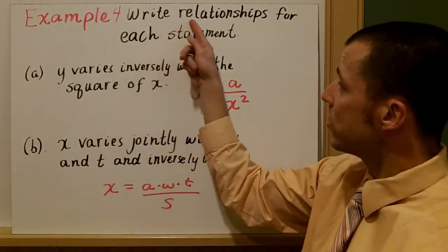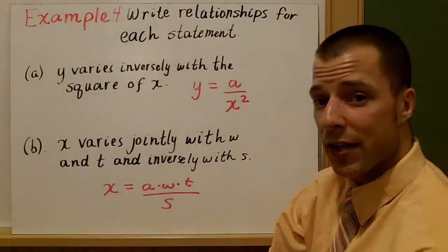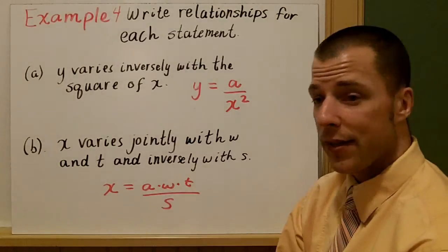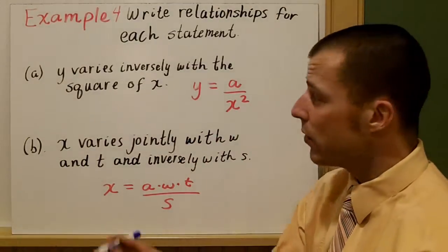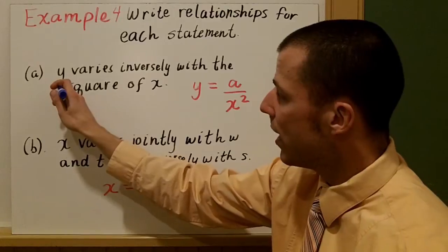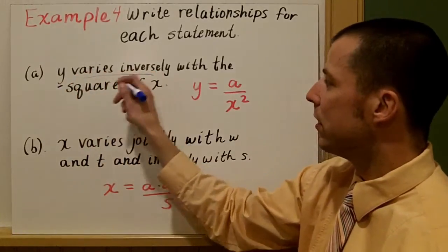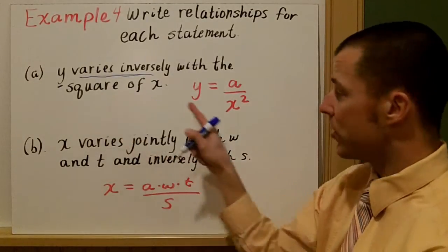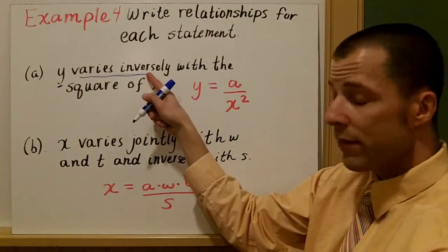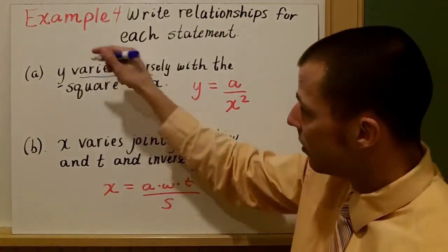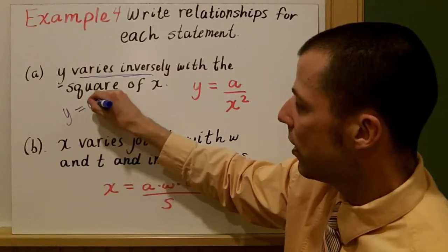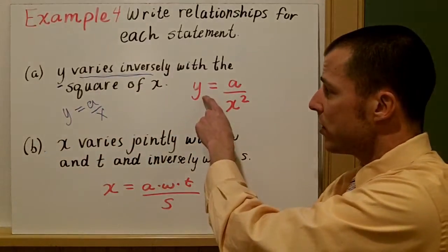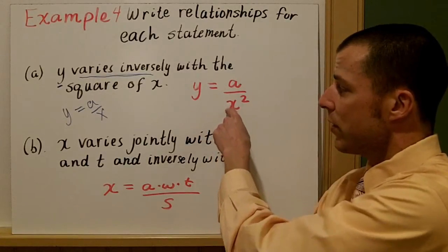Our last example asks us to write a relationship for each statement by translating it into an equation. First: y varies inversely with the square of x. Varies inversely means division, and the square of x is x squared. So we get y equals a over x squared.